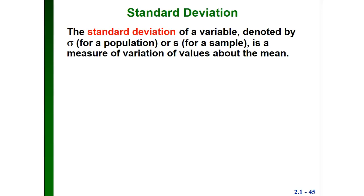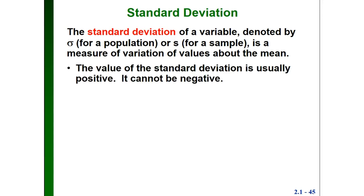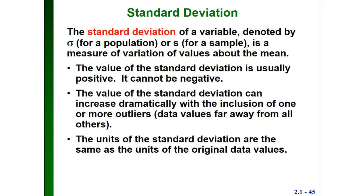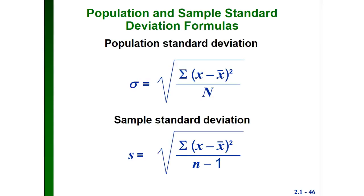The standard deviation has to do with the mean and how far the values are from it. There are two symbols for the standard deviation depending on whether we're looking at an entire population or just a sample. For a population we use sigma; for a sample we use s. One property of the standard deviation is that it can't be negative — it's usually positive but can be zero. The value of the standard deviation can increase dramatically if we have outliers, and the units of the standard deviation are the same as the units of the original data values.